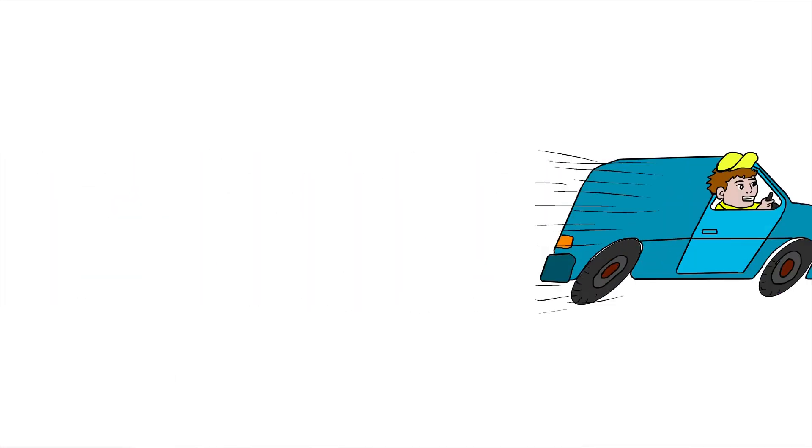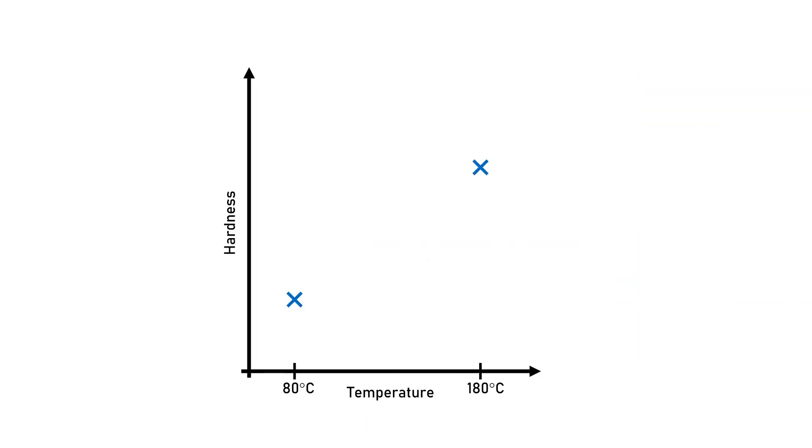Fractional designs get results fast with a limited number of runs by sacrificing some depth of information. Response surface designs are the opposite — you perform a response surface design when you really want to know the details about your system. With a two-level full factorial design you can only fit a linear model, and a linear model doesn't contain the level of detail you're interested in.